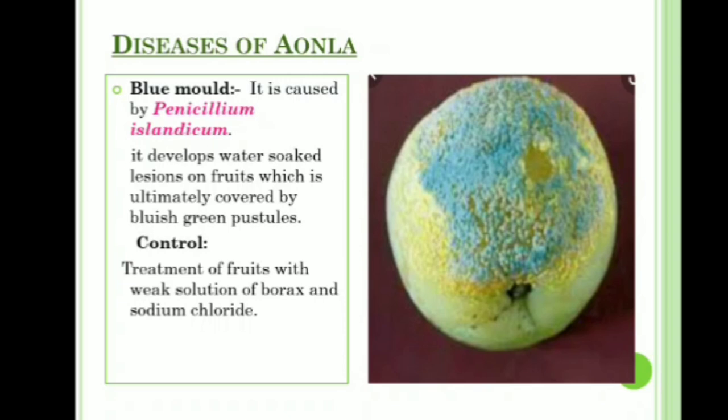The next disease is blue mold, caused by Penicillium islandicum. It develops water-soaked lesions on the fruits, which are ultimately covered by bluish-green patches as seen in the picture. Control: treatment of fruit with a weak solution of borax and sodium chloride.